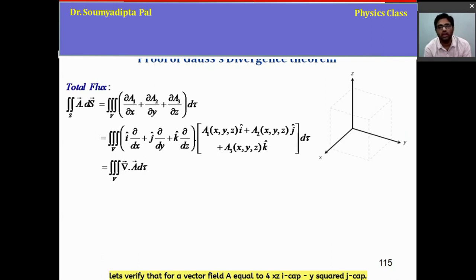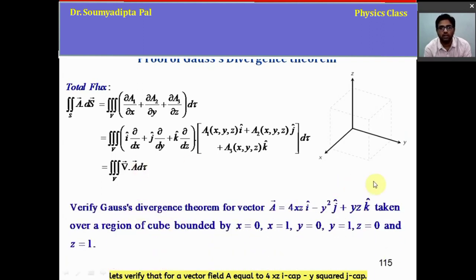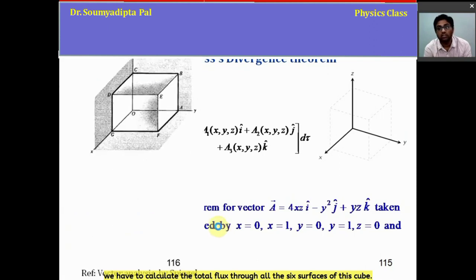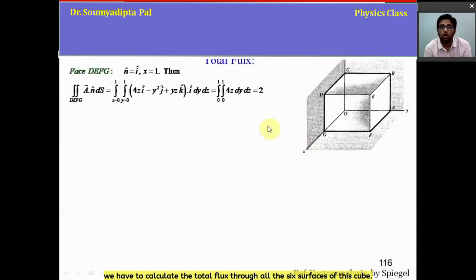let's verify that. For a vector field A equal to 4xz i cap minus y squared j cap plus yz k cap, taken over a region of a cube of unit length along each side. So to do that, first we have to calculate the total flux through all the six surfaces of this cube.